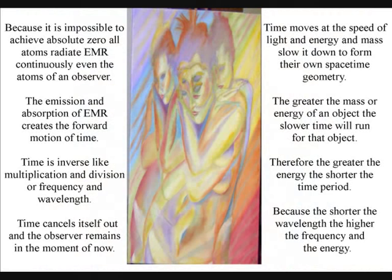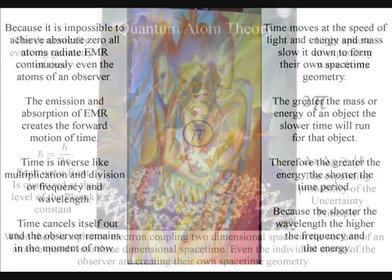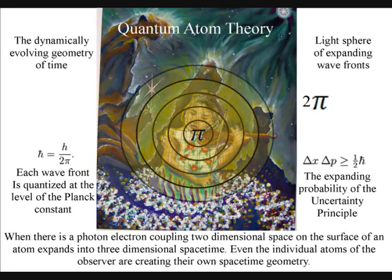To put this very simply, time moves at the speed of light and energy and mass slow it down to form their own space-time geometry. Therefore the observer will collapse the wave-function, creating his or her own independent reality of time and space.